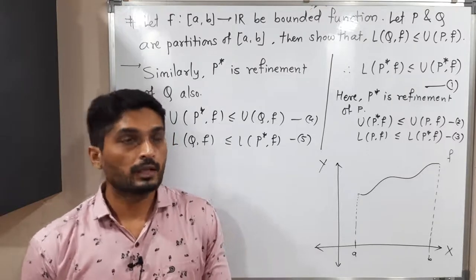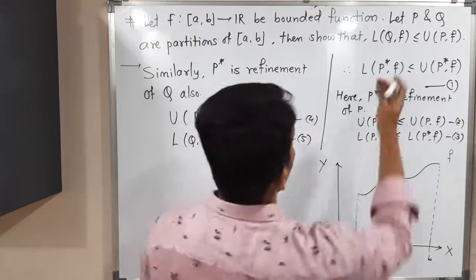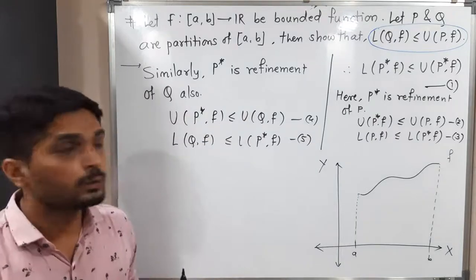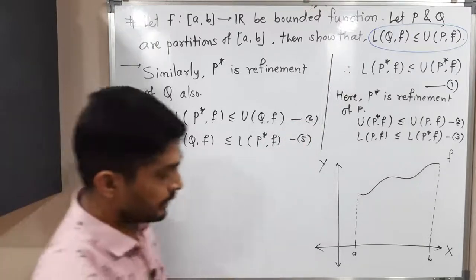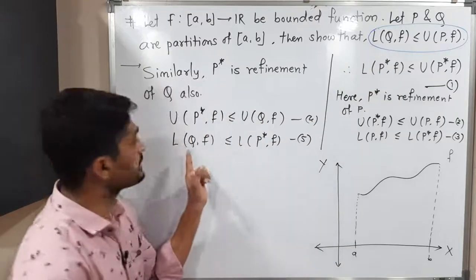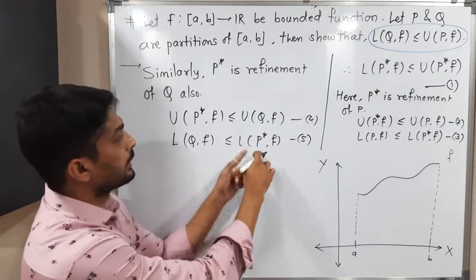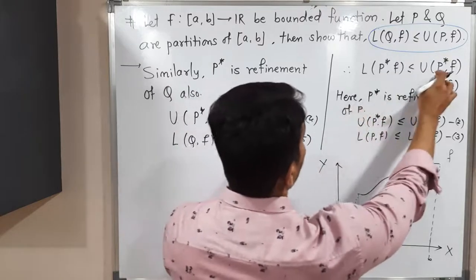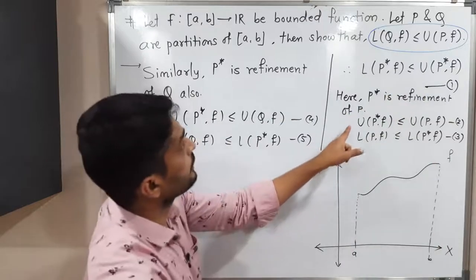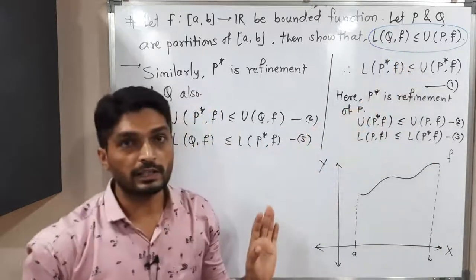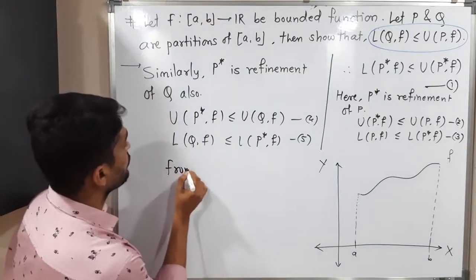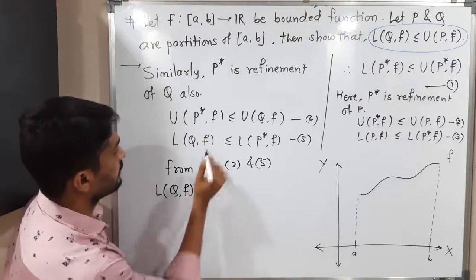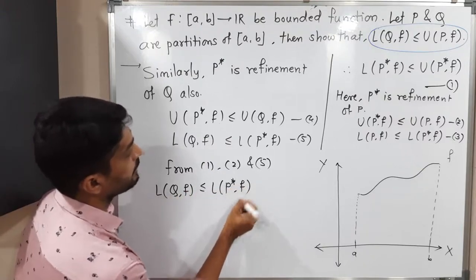Our target is to prove L(Q, F) ≤ U(P, F). Using inequalities 1, 2, and 5, we can chain them: L(Q, F) ≤ L(P*, F) ≤ U(P*, F) ≤ U(P, F). Since a ≤ b, b ≤ c, c ≤ d implies a ≤ d, we can conclude directly that L(Q, F) ≤ U(P, F). In this way we have proved the required inequality.